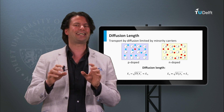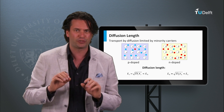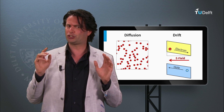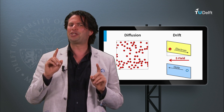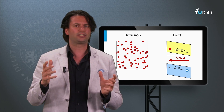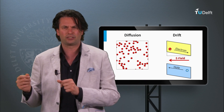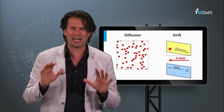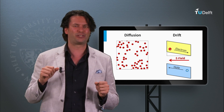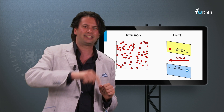Important to remember: in a doped material, the minority charge carriers have a shorter diffusion length compared to the majority charge carriers. Now we know how to excite charge carriers, how to manipulate semiconductor material to create majority and minority carriers, and we understand the transport mechanisms. It is time to build a solar cell using these tools — we will do that in the next block.